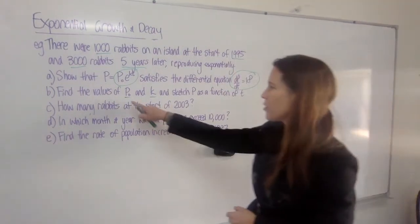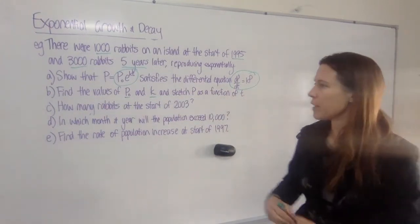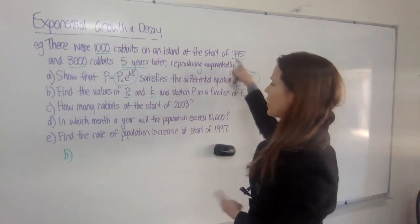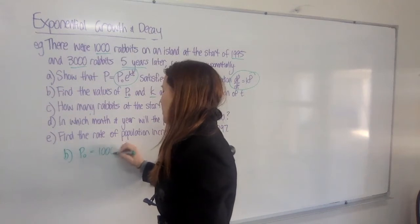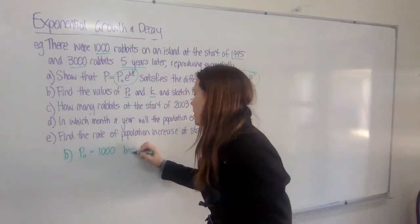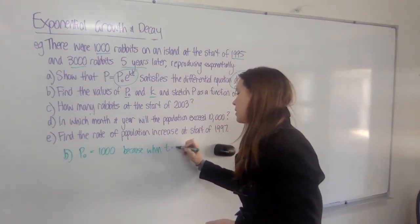Okay, for part B, we need to find the values of P₀ and k, and then sketch P as a function of t. Now, we were actually given the number of rabbits at the very start of this experiment. So we can actually just state that P₀ equals 1,000, but we need to also prove it.